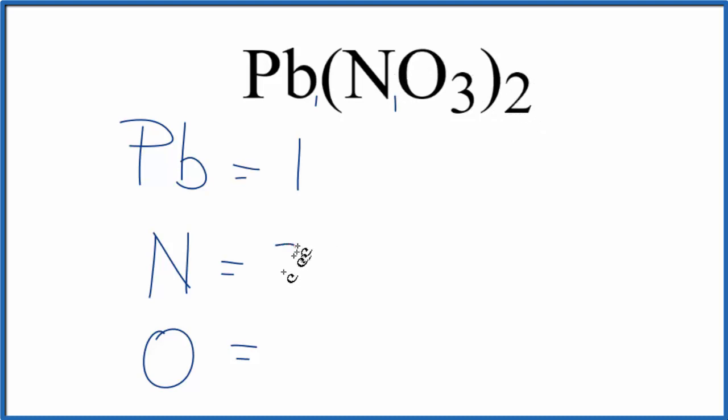2 times 1, 2 nitrogen atoms. 2 times 3, that gives us 6 oxygen atoms. And if we wanted to know how many total atoms are in Pb(NO₃)₂, we just add these numbers up. 6 plus 2 is 8, plus 1, 9 total atoms in this lead nitrate.